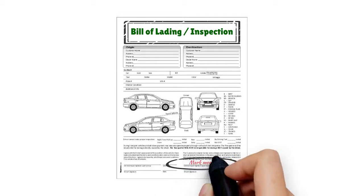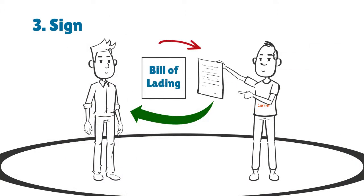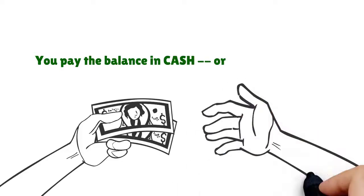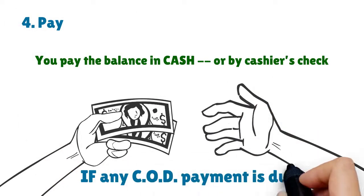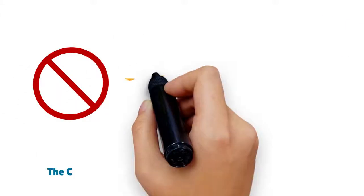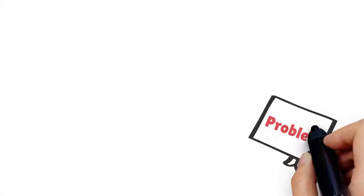Once you sign it, we cannot hold the carrier responsible for any issues that are not clearly described there. Once you sign, the driver gives you a copy. You pay the balance in cash or by cashier's check if any COD payment is due. The carrier is not able to accept a credit card on the spot.